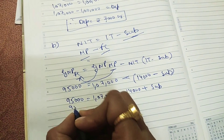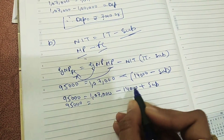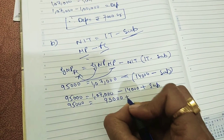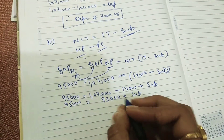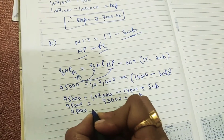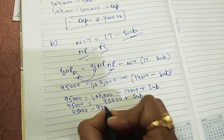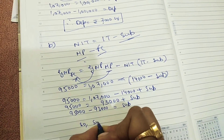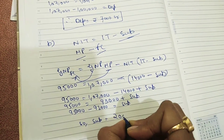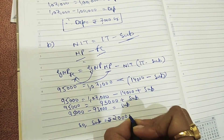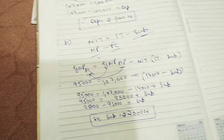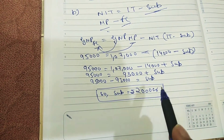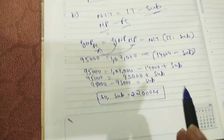Solving: 95,000 = 1,07,000 − 14,000 + Subsidies = 93,000 + Subsidies. Therefore Subsidies = 95,000 − 93,000 = ₹2,000 crore. So depreciation = ₹7,000 crore and subsidies = ₹2,000 crore.